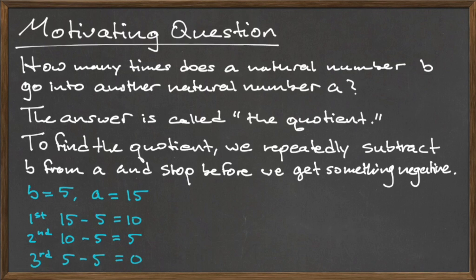Since 10 is also bigger than 5, we can compute a second subtraction to get 10 minus 5, which is equal to 5. Finally, we can compute one more subtraction to get 5 minus 5, which is equal to 0.